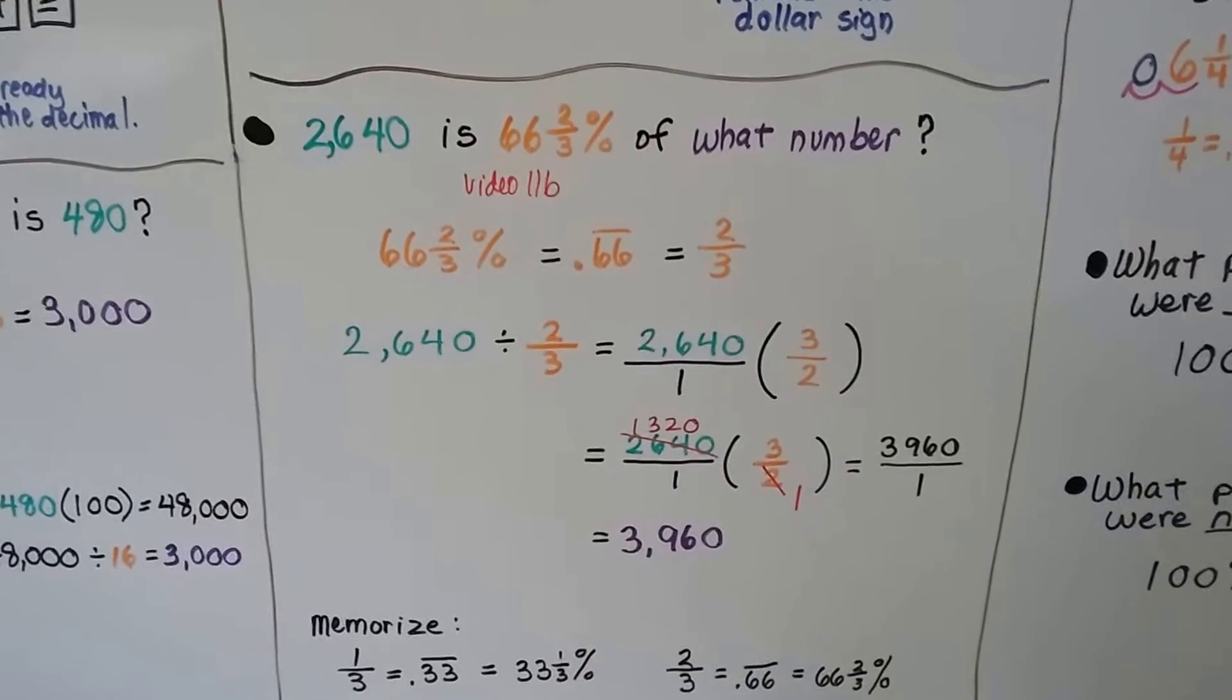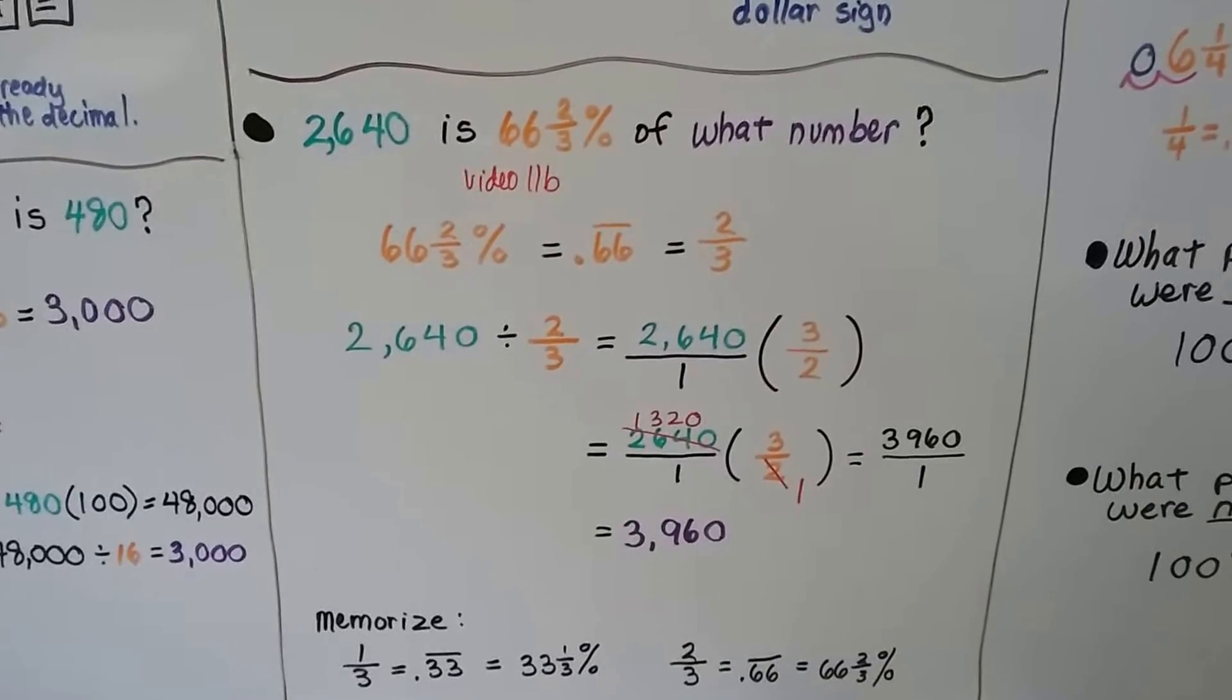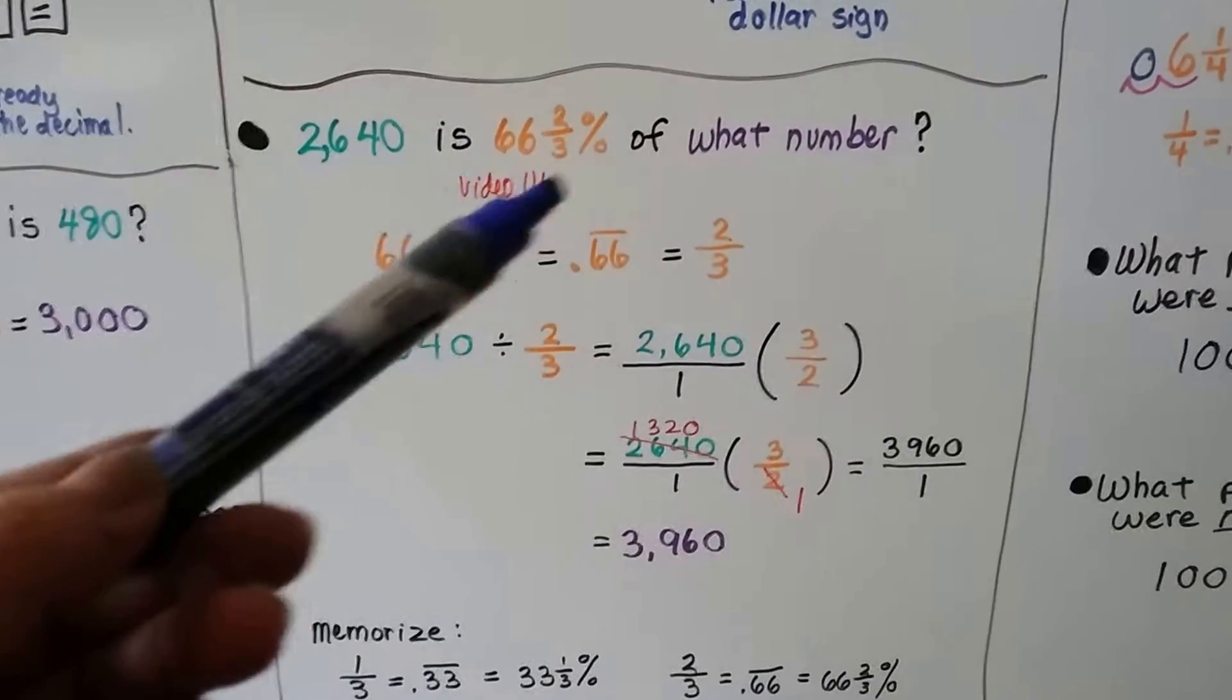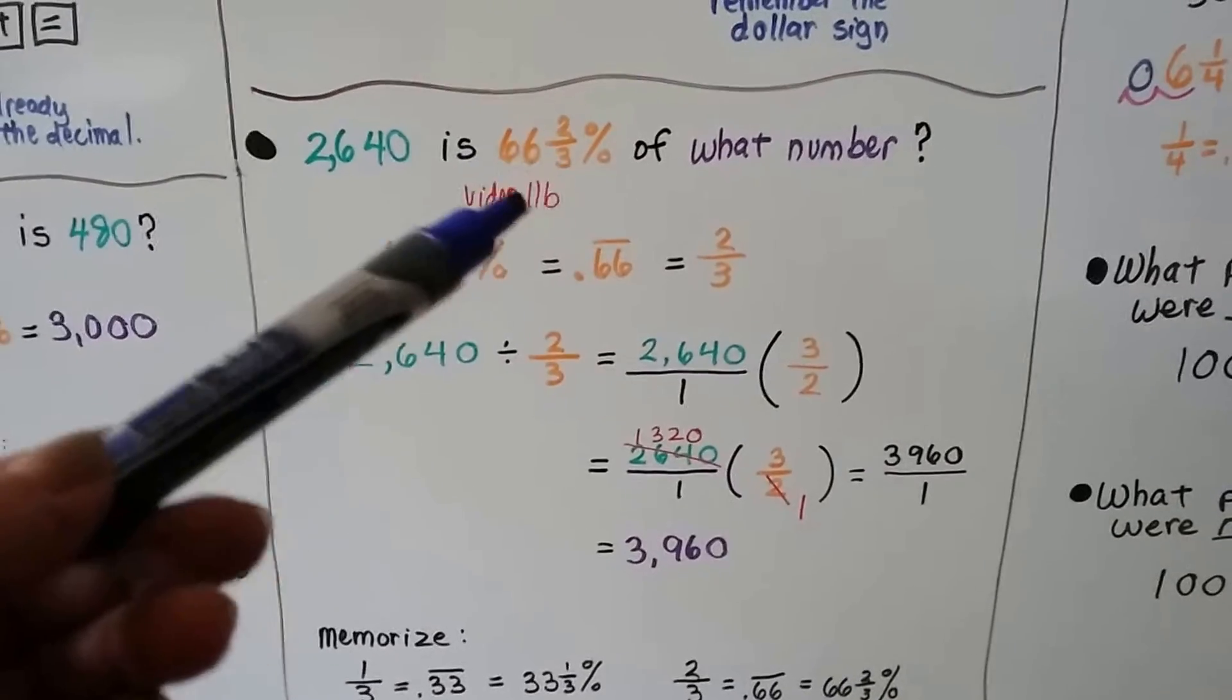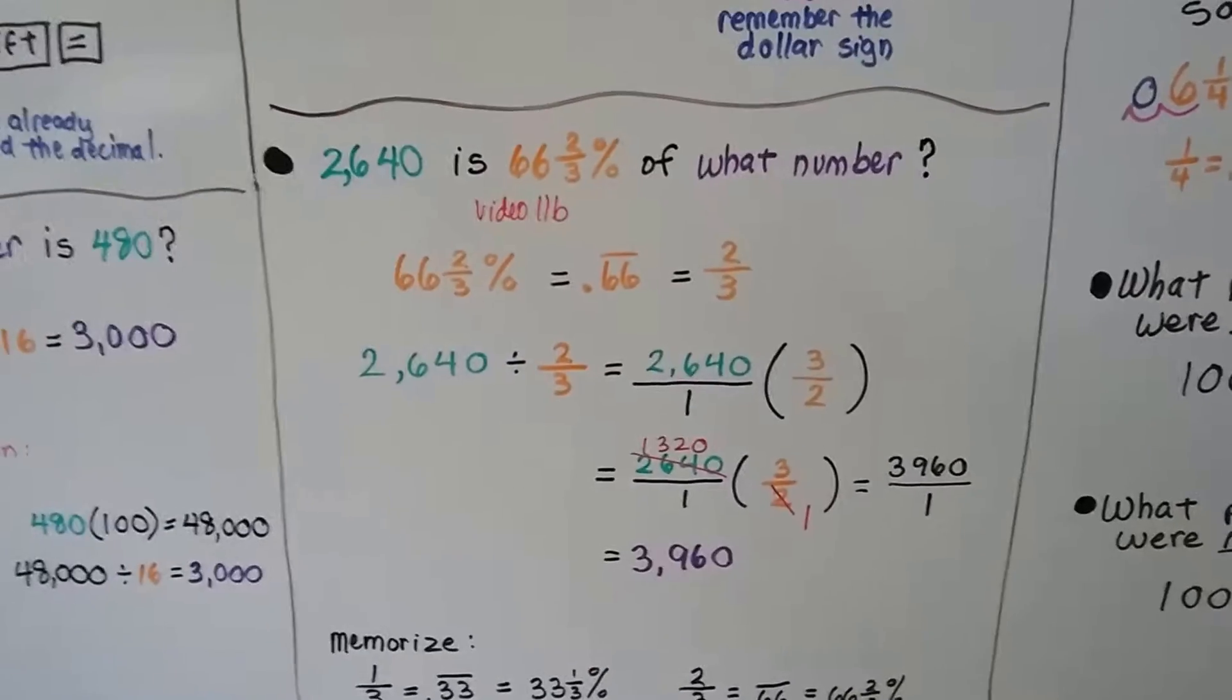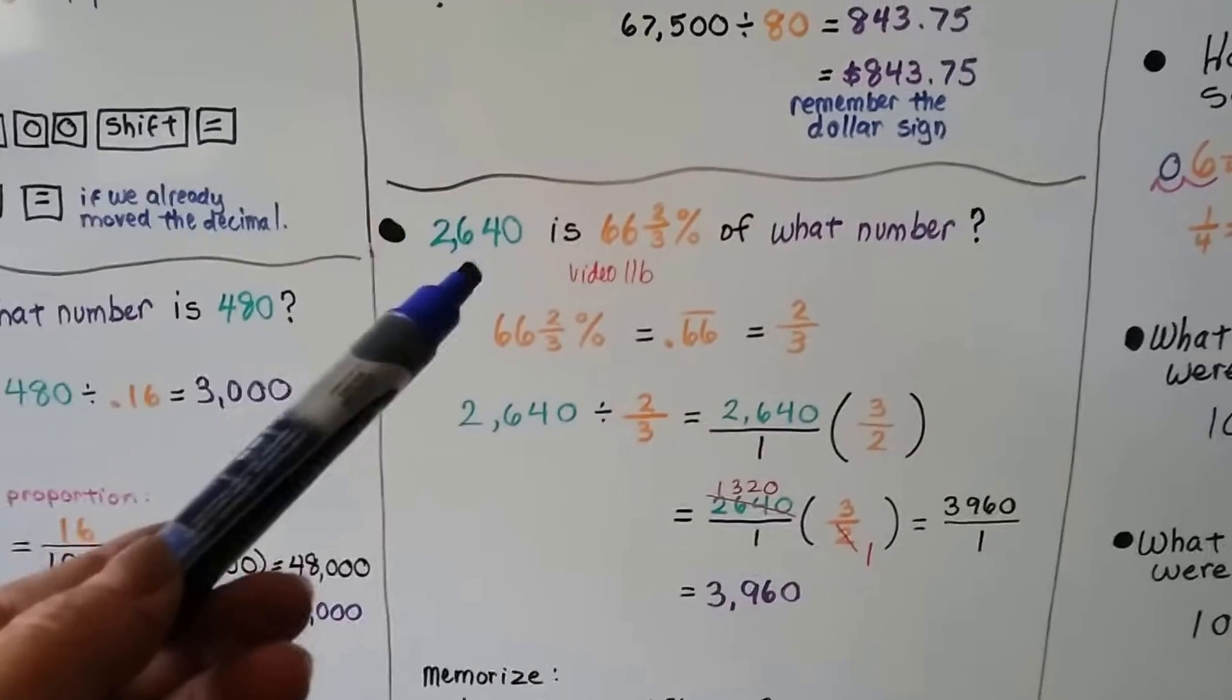2,640 is 66 and two-thirds percent of what number? And we learned how to turn this into a decimal in video 11b. So there's links to that too. Now, look at how this is written.